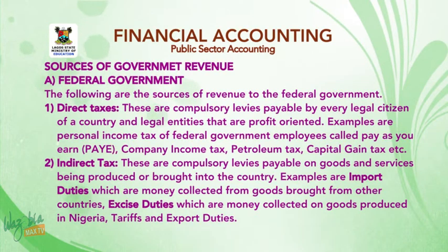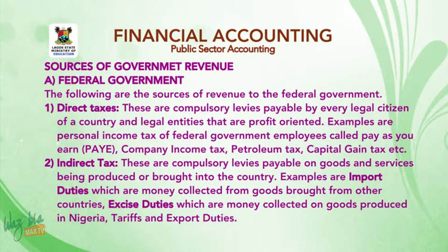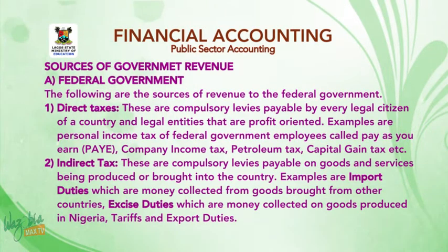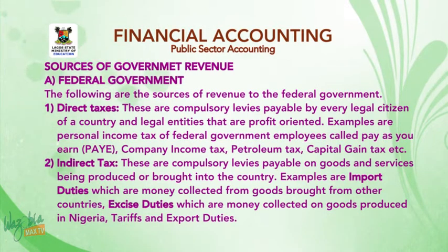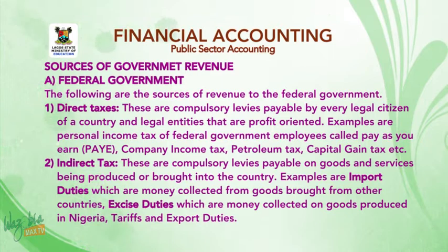Sources of government revenue. A, federal government sources: One, direct taxes — these are compulsory levies paid by every legal citizen of a country and legal entities that are profit-oriented. Examples include personal income tax of federal government employees (Pay As You Earn/PAYE), company income tax, petroleum tax, and capital gains tax.